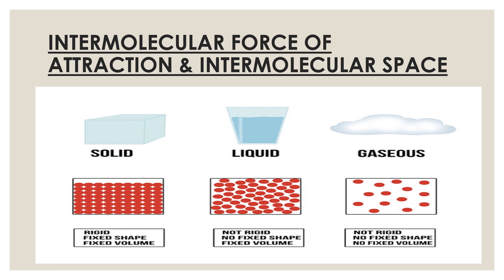Gas is not rigid because it flows easily in the atmosphere. Gas does not have any fixed shape — if you blow air into an inflated balloon, it will take the shape of the balloon. Gas also does not have a fixed volume. For example, if we spray perfume from a bottle, it just disperses in the atmosphere.